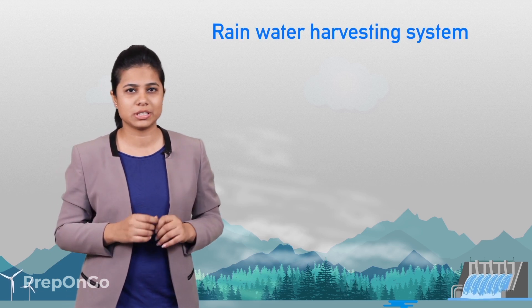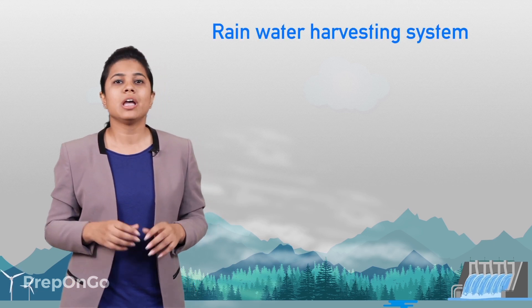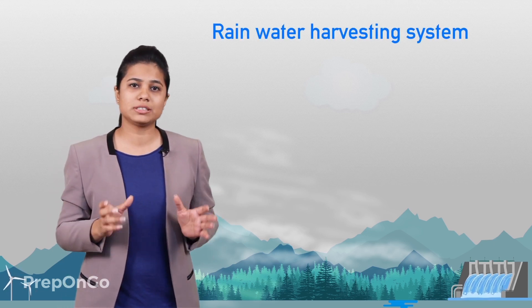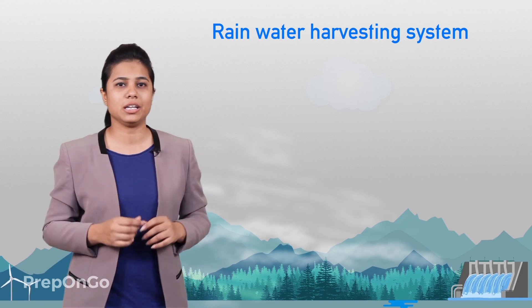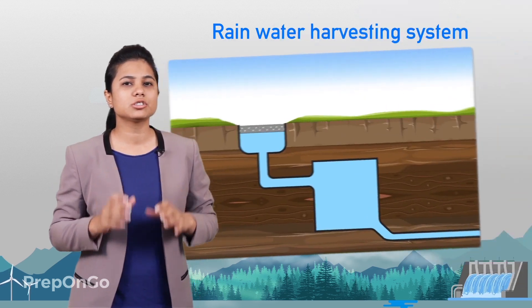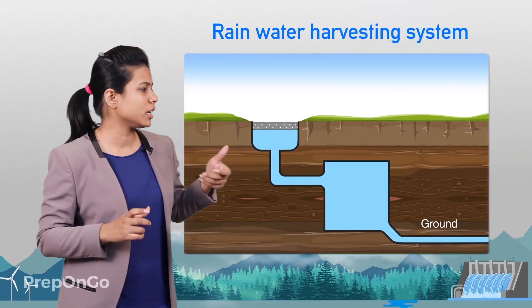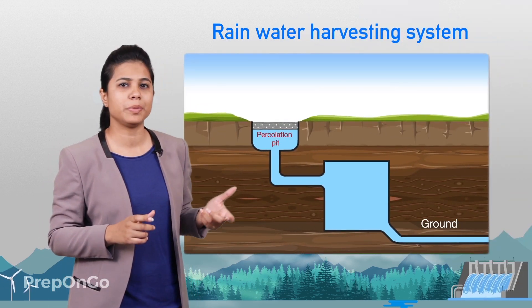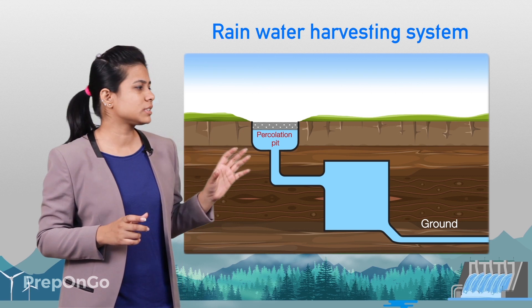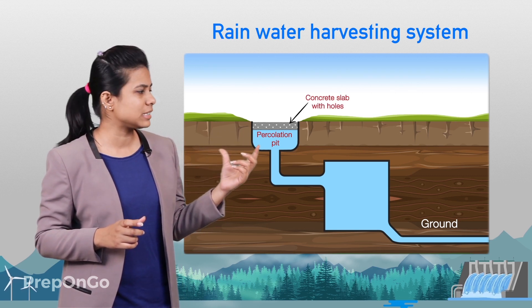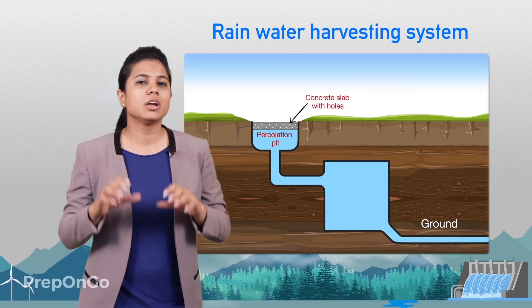Hence, it is very important that there is a rainwater harvesting system. It is commonly done by constructing a percolation pit which is covered by a concrete slab that has many holes in it.